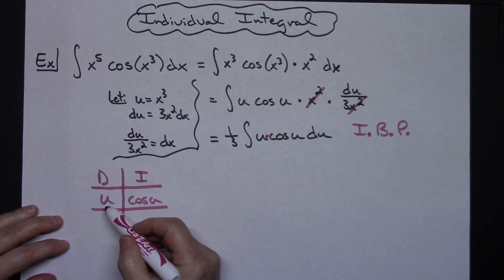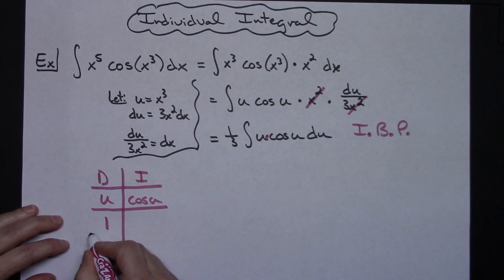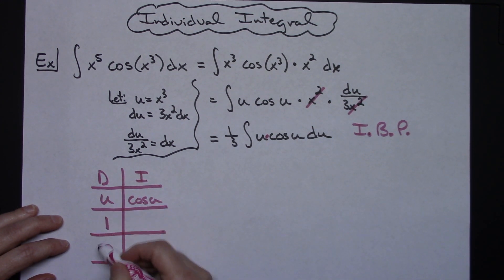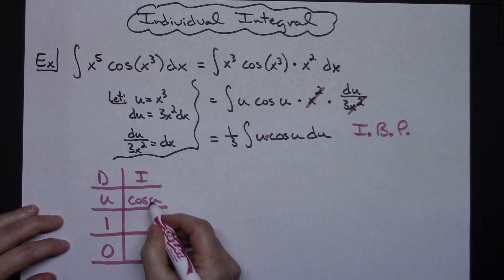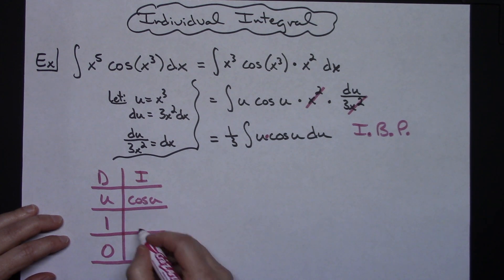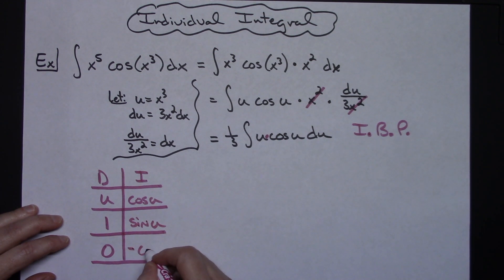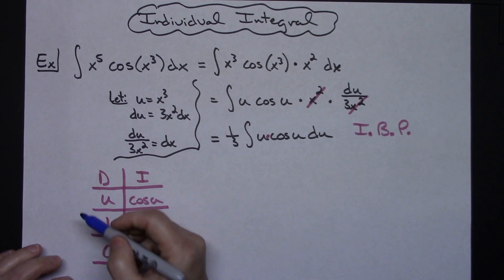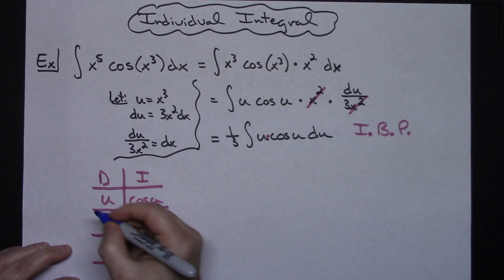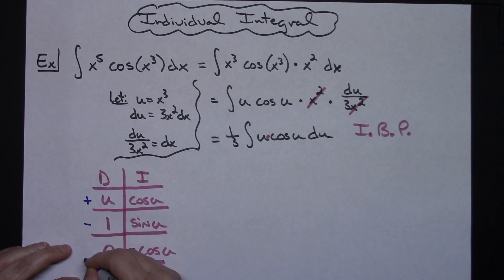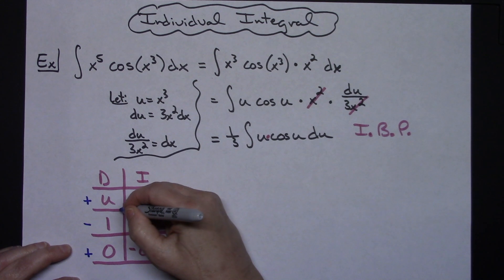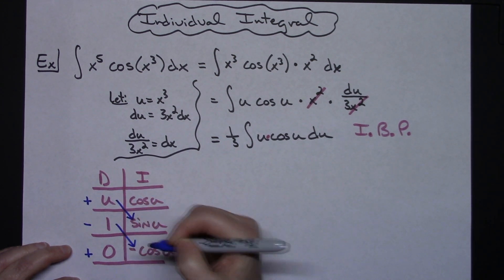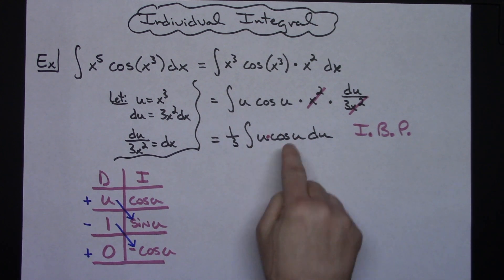Going down the left-hand derivative column: the derivative of u is 1, and the derivative of 1 is 0. This shortcut works out nicely because the derivative column comes down to 0. Now in the integral column, I integrate cosine u to get sine u, then integrate again to get negative cosine u. Then I alternate signs starting with plus, then minus, then plus, and multiply across the diagonals to complete the integration.